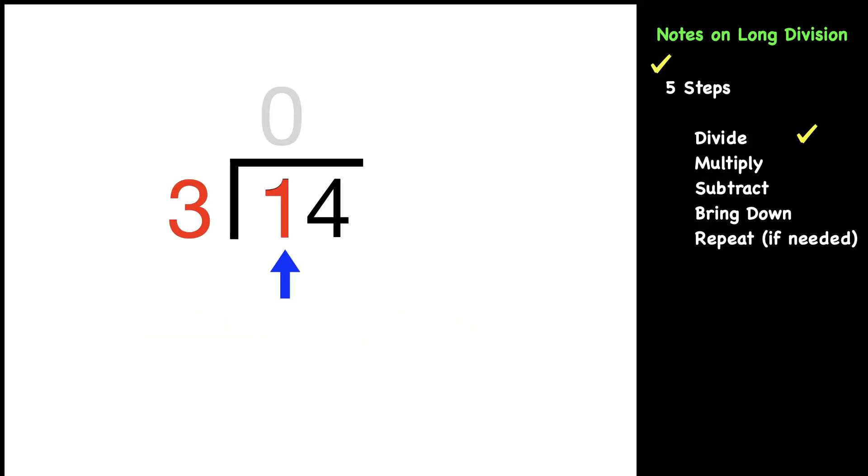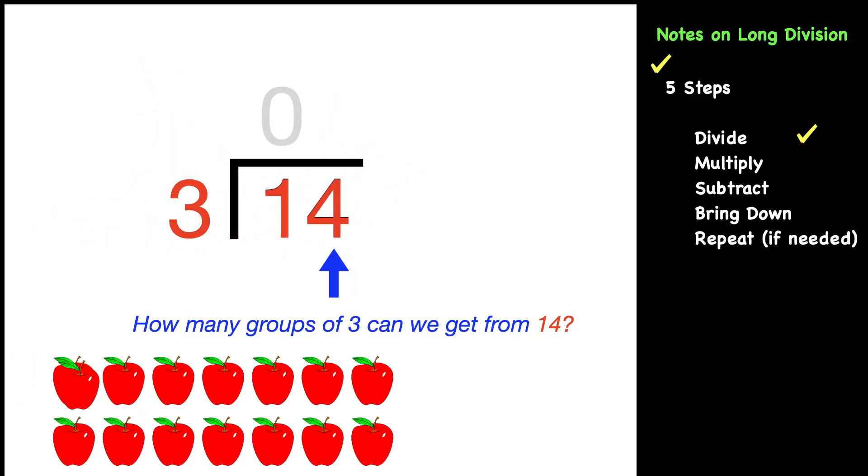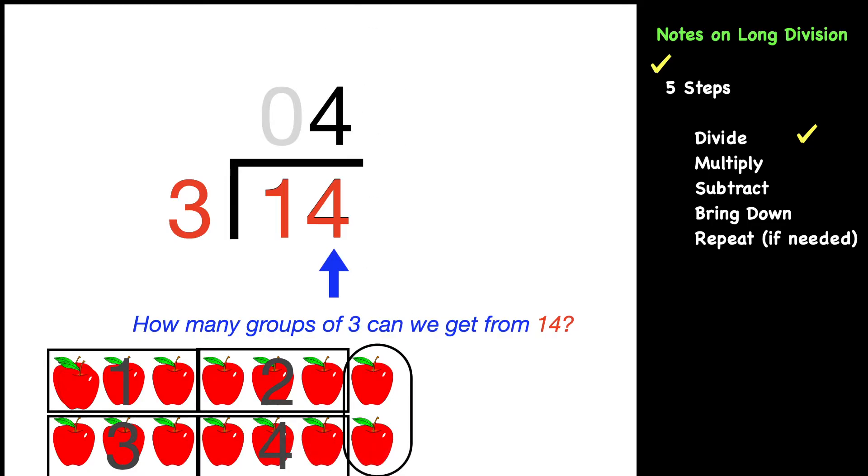Now we go to the four and ask the same question, but this time it's 14. How many groups of three can we get from 14? We can get a total of four groups of three, which we put on the top. Notice that we have the two left over.